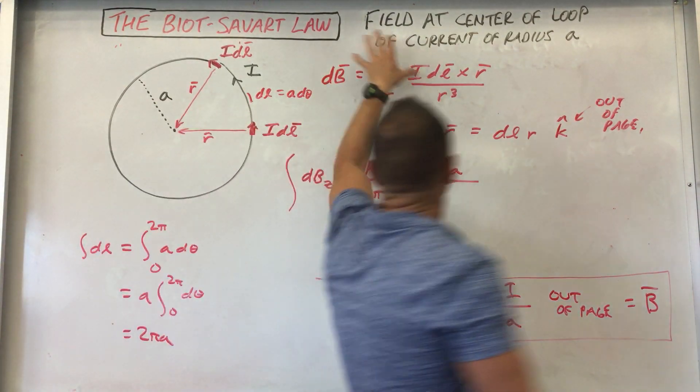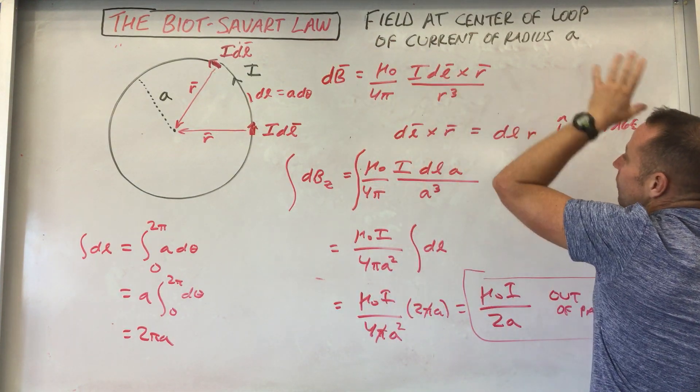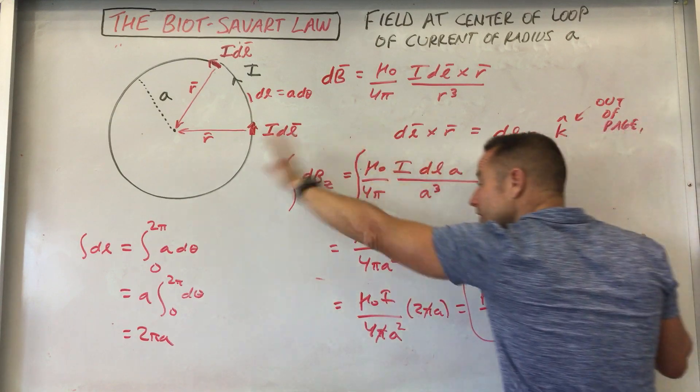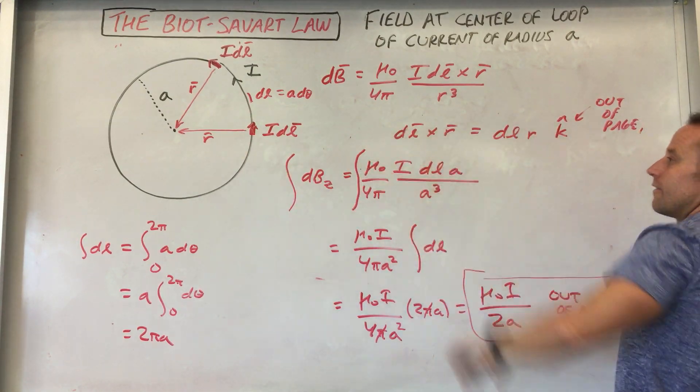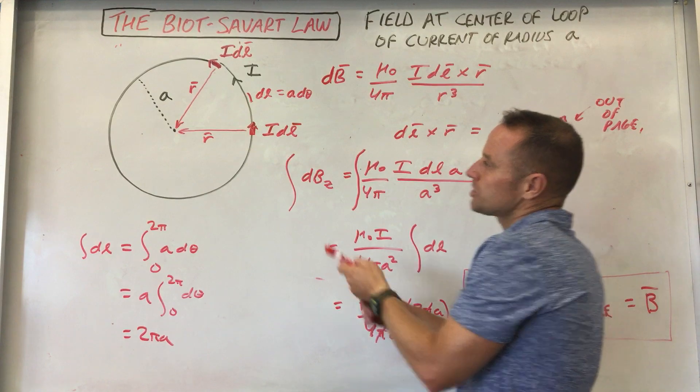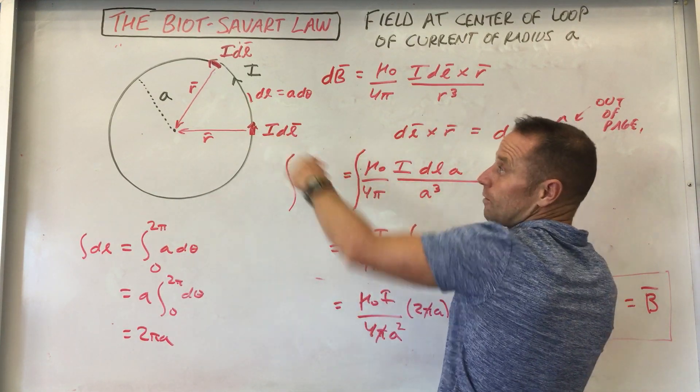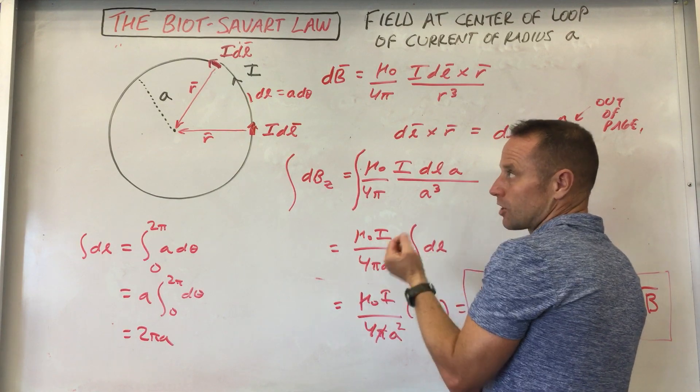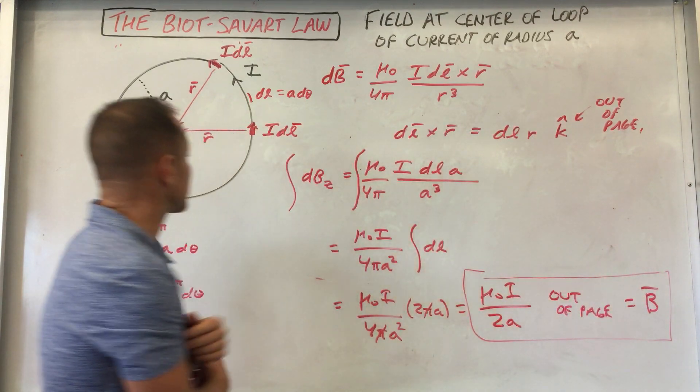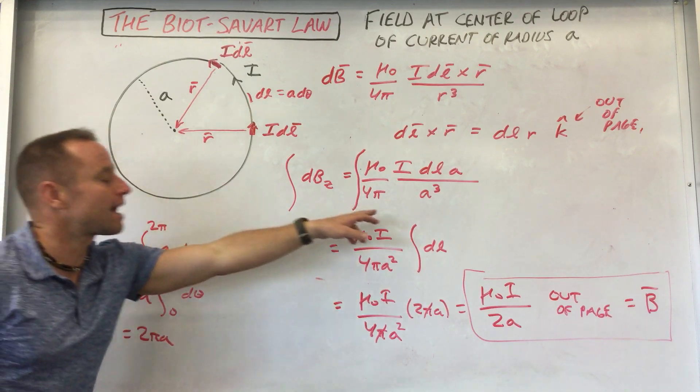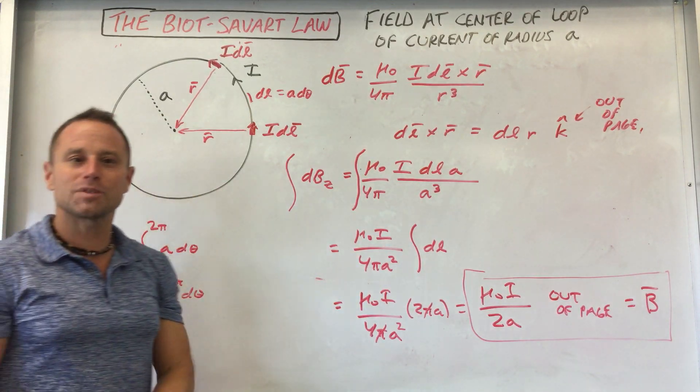What's nice is when you find out that certain things are constant and then you can pull them out of the integral. So look for things that are constant. This problem was much easier than the problem of finding the field, say above a long straight wire, because then the distance between the current and the point in question is always changing. Here it's a constant. So we're able to pull that sort of thing out. So hopefully that helps. Good luck.